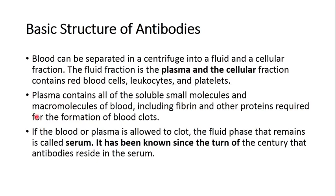The plasma contains small molecules and macromolecules such as fibrin and other proteins required for blood clot formation. If we allow the plasma to clot, some fluid phase will remain — that fluid phase is known as serum. Antibodies reside in the serum, so when we centrifuge blood and then clot the plasma, the remaining fluid part contains the antibodies.